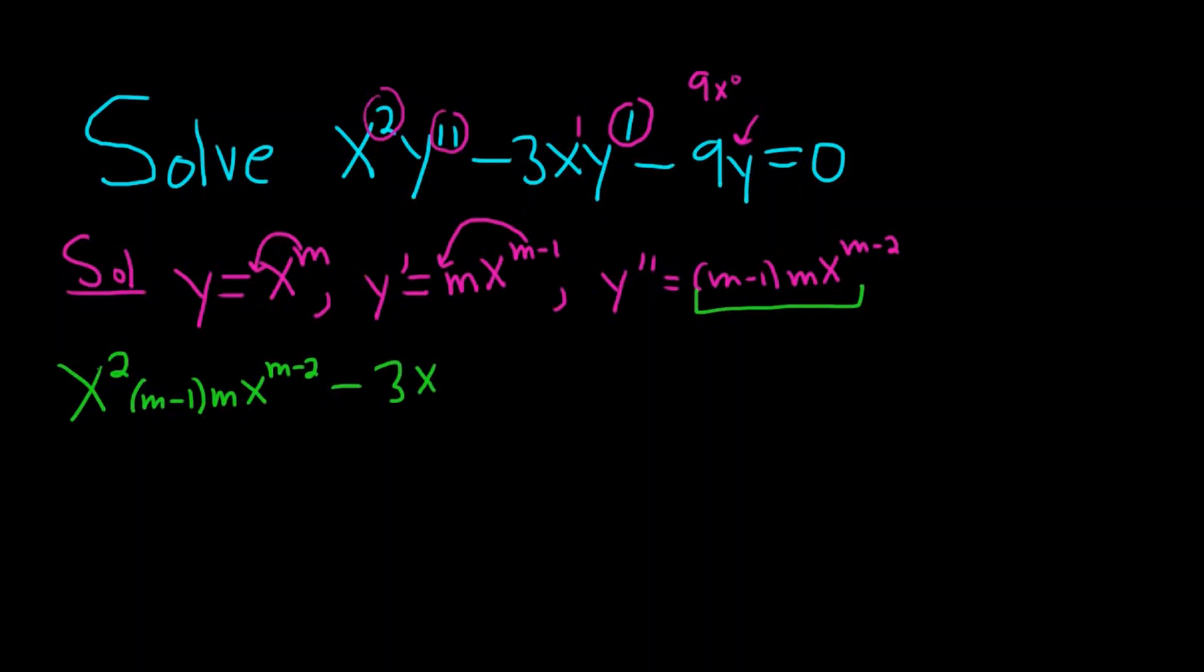x, and then y prime. That's this one. So mx to the m minus 1, and then minus 9y. And y is just x to the m. And this is equal to 0.